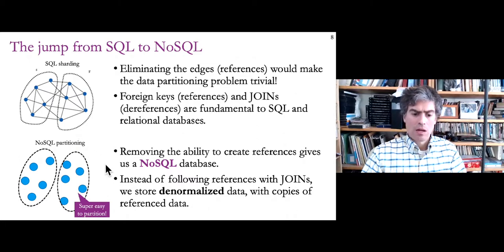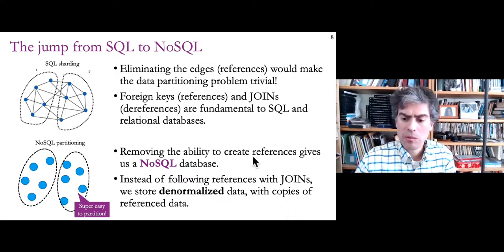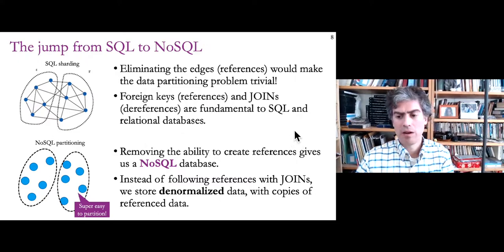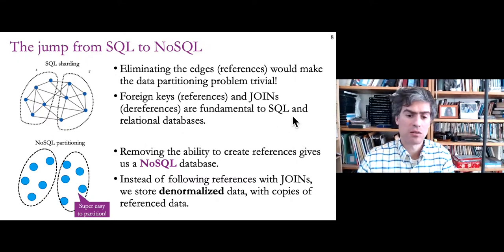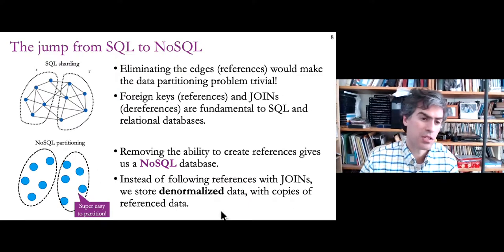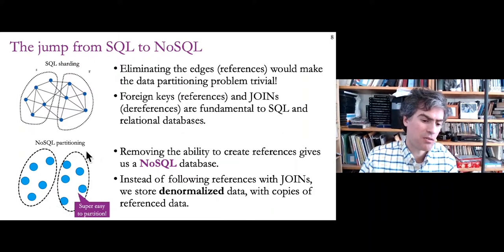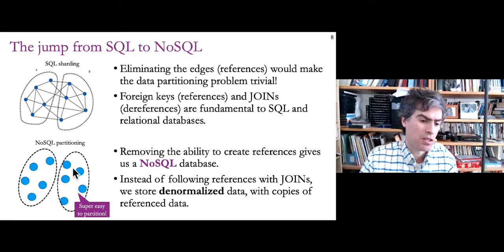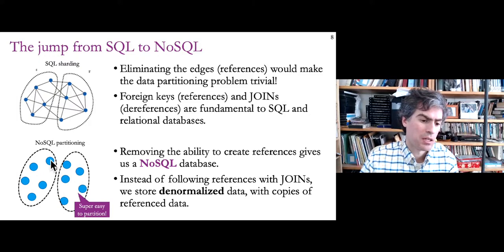When we remove the ability to create references, we lose the ability to do joins, we can no longer use SQL, and we no longer have normalized data. We have denormalized data with copies of reference data. That gives us more data to store — it's inefficient — but it makes partitioning easy because you never have references to data in other partitions. You can think of this as what NoSQL databases do at a high level.